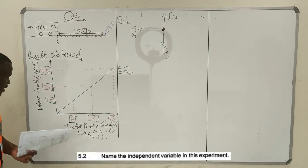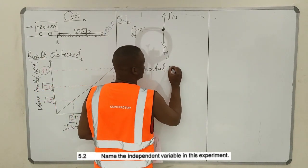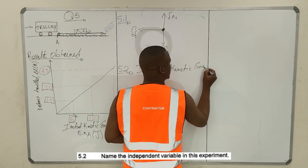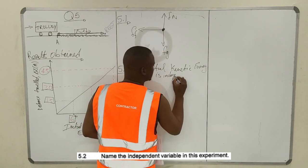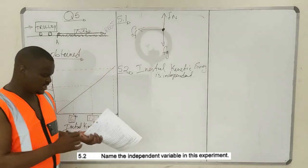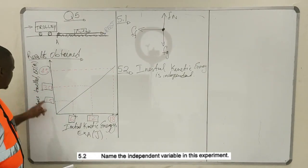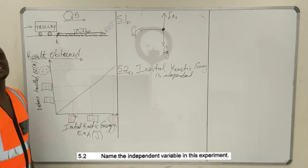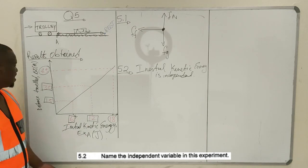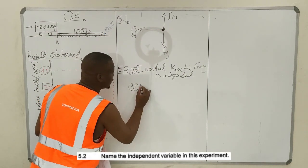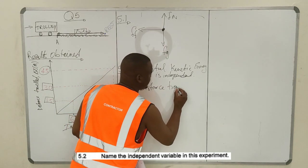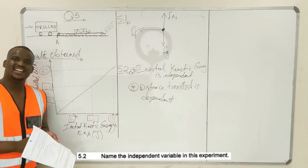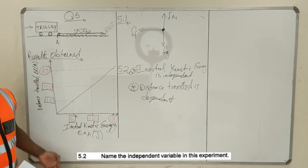The initial kinetic energy is your independent variable, because the amount of initial kinetic energy in this experiment is not dependent on anything — you give it in whatever amounts you want. So the initial kinetic energy is independent, and the distance travelled is dependent because it depends on the amount of kinetic energy you inject.